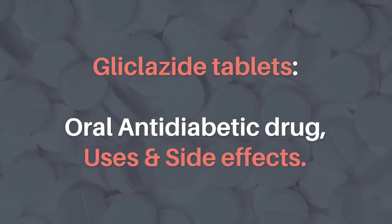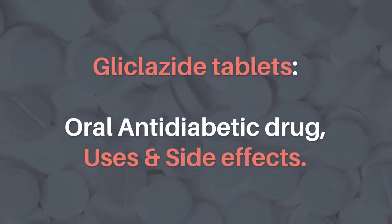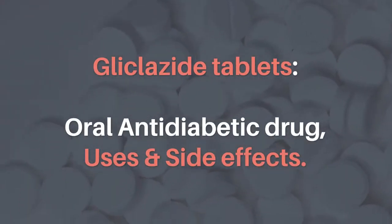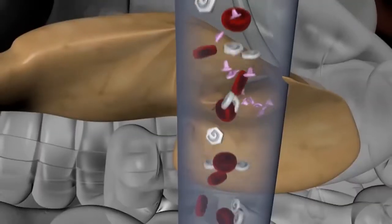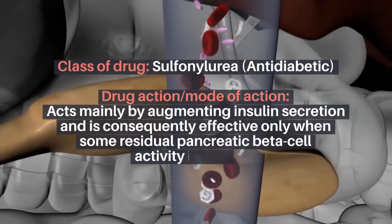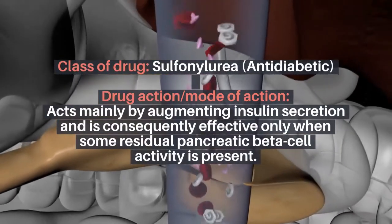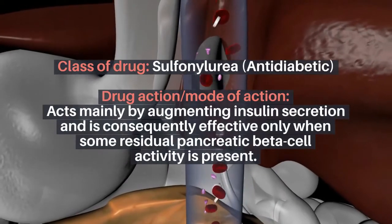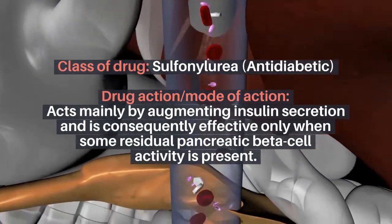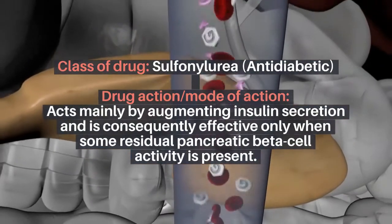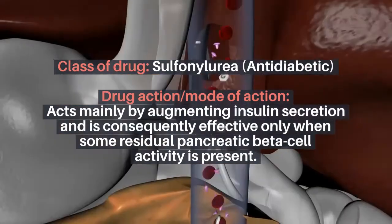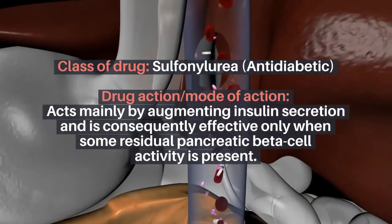Gliclozide tablets. An oral antidiabetic drug. Uses and side effects. Chemical structure. Class of drug: sulfonylurea, antidiabetic. Drug action and mode of action: acts mainly by augmenting insulin secretion and is consequently effective only when some residual pancreatic beta cell activity is present.